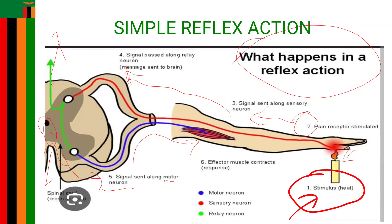The third complication is spasticity — involuntary tightening or stiffness of the muscles, which can affect mobility and comfort. Management includes physical therapy and regular stretching exercises. Medication like botulinum toxin injections can be prescribed to reduce muscle tightness. In severe cases, surgical interventions such as an intrathecal baclofen pump can be considered to reduce muscle stiffness.